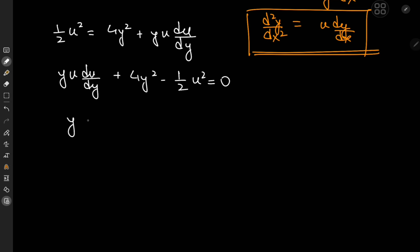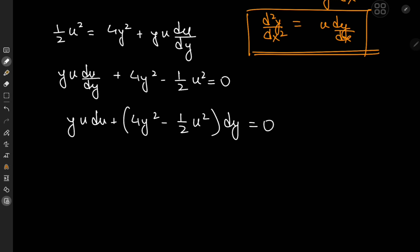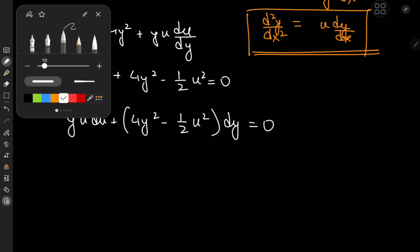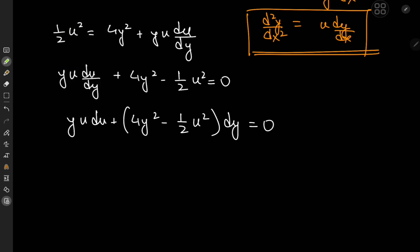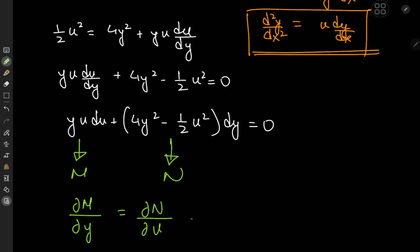The reason for writing it in this manner is to check whether or not we have an exact differential equation. So let's call the function of u and y as M and N. For an exact differential, we need the partial of M with respect to y to equal the partial of N with respect to u.